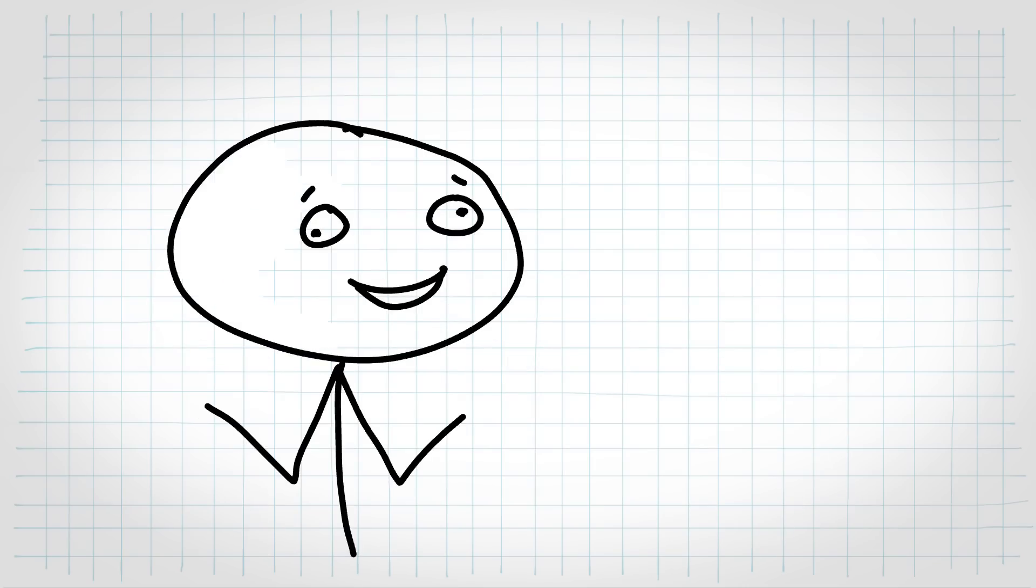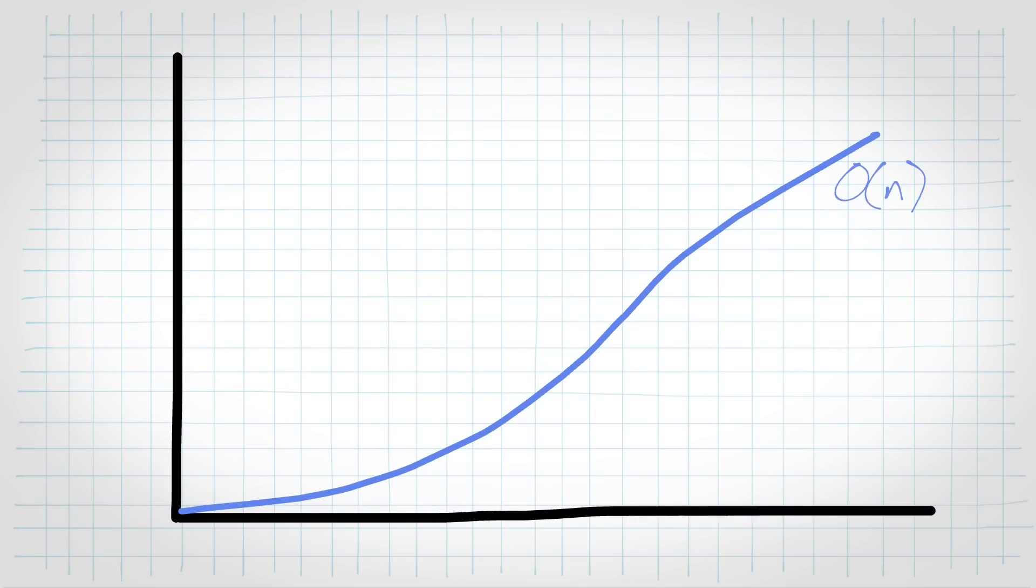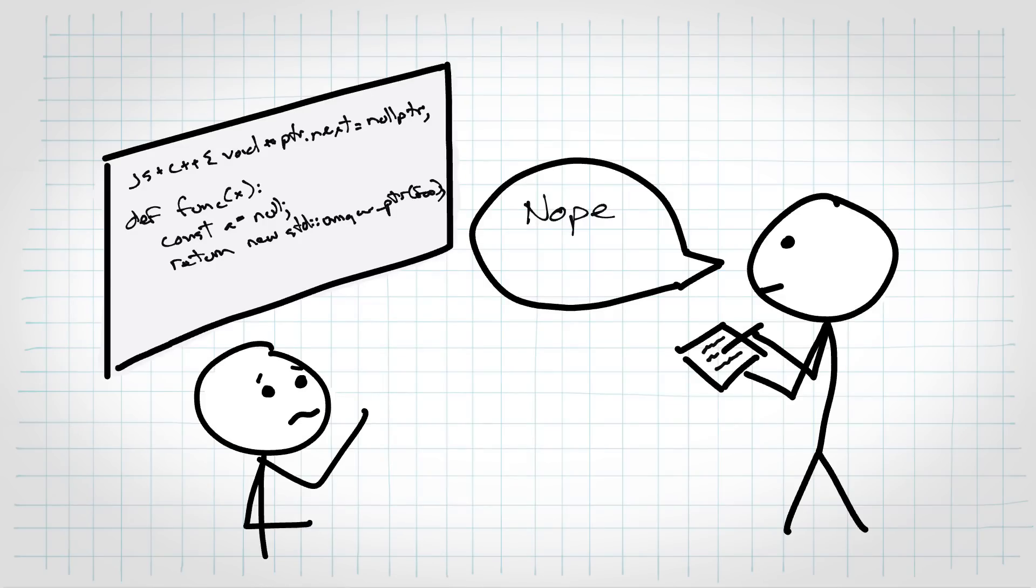Since big O is often describing the dominant term, and the others are dropped, when you're doing micro-optimizations, what's interesting is that those can actually be super important. For example, it's entirely possible for an order n algorithm to outperform an order log n one on small inputs, because of those constants that aren't reflected in big O. If you remember those graphs we looked at, big O defines the limiting behavior as the input gets huge. But at smaller values, it doesn't necessarily say anything. As you can guess, this was a bad idea.